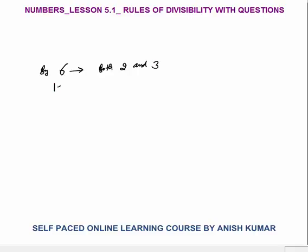What about 12? A number is divisible by 12 when it is divisible by both 3 and 4. Why 3 and 4? Why not 6 and 2? We can't take 6 and 2 because a number divisible by 6 and 2 may or may not be divisible by 12.